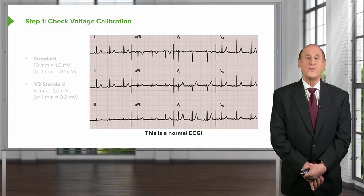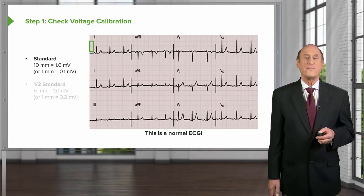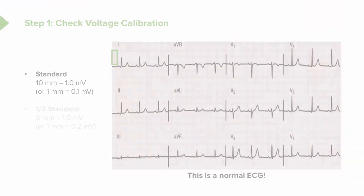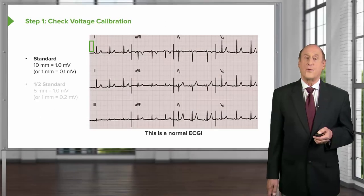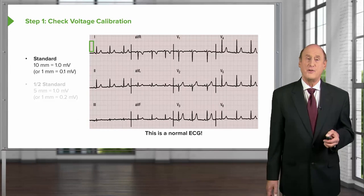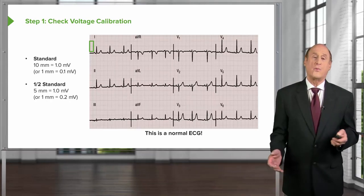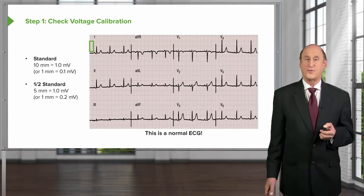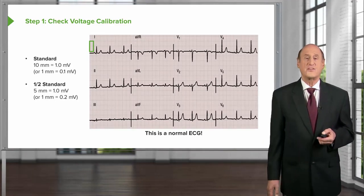Here is a normal ECG. Notice in the upper left corner there is a little green box — that's the standard calibration. If you count the little tiny boxes, there are 10: each big box has five smaller boxes, so two big boxes constitute 10 small boxes. Each small box is one millimeter and corresponds to one millivolt of electrical activity. This is the standard on all ECG machines. If you set the standard to half, each box represents less voltage; if you double it, more voltage. Almost all EKGs use this 10-box standard.